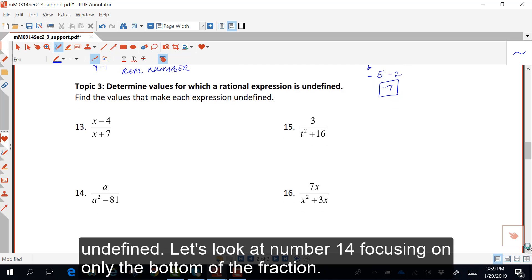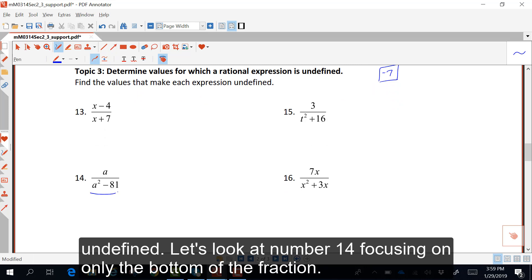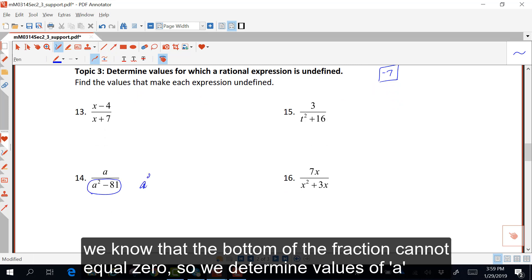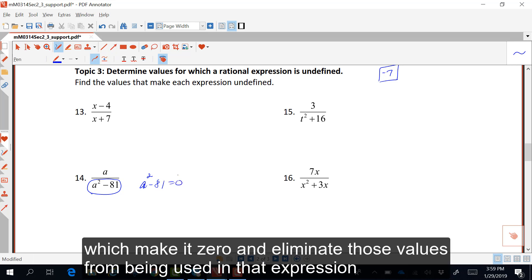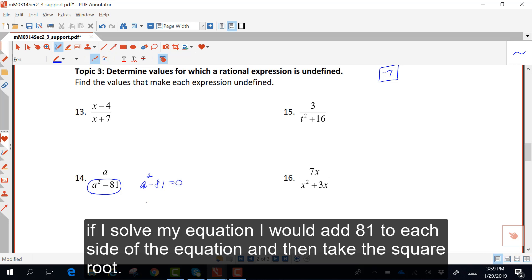Let's look at number 14. Focusing on only the bottom of the fraction, we know that the bottom of the fraction cannot equal 0. If I solve my equation, I would add 81 to each side of the equation,